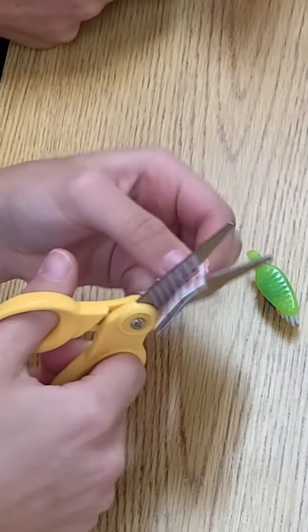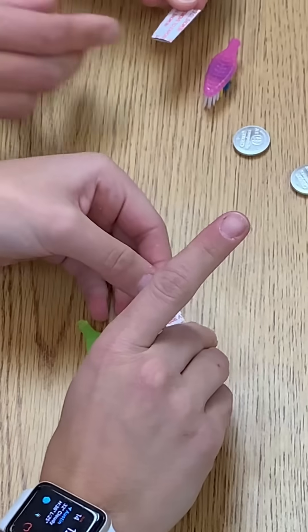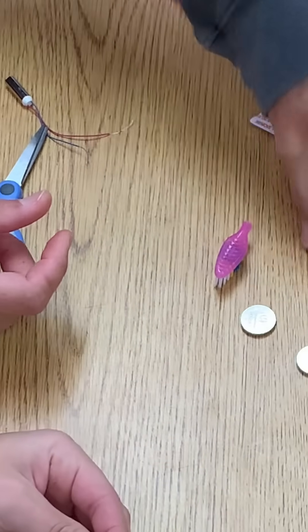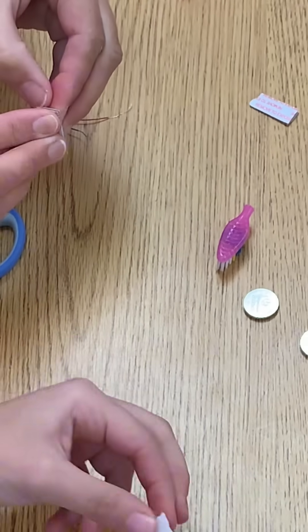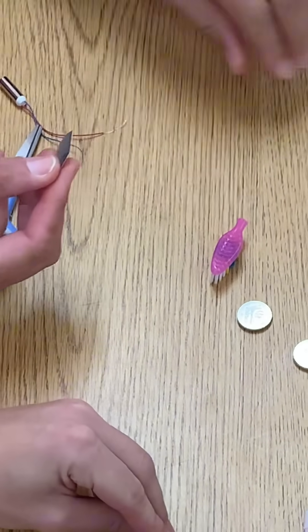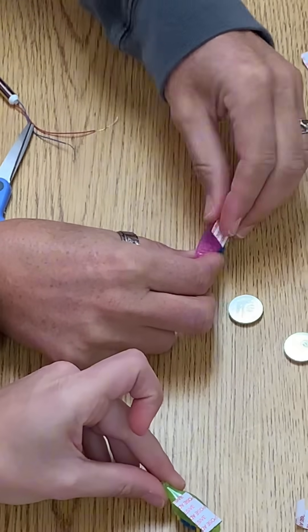Cut this strip in half so that you've got a piece that is like a little rectangle, about the length of your toothbrush head right there. Then what you want to do is peel off the paper to expose the sticky side and stick it right onto your toothbrush, right onto the head of the toothbrush.